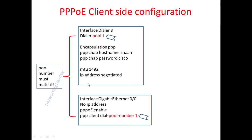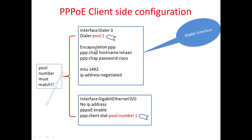This slide shows the typical configuration required on the client side of PPPoE. The first step is to create a dialer interface — 'interface dialer 3' — which will create a dialer interface, along with 'dialer pool 1' to create a pool. The configuration also requires encapsulation PPP, which provides encapsulation using the PPP protocol, along with a handshake mechanism and the maximum transmit unit (MTU) to bound the maximum packet length.